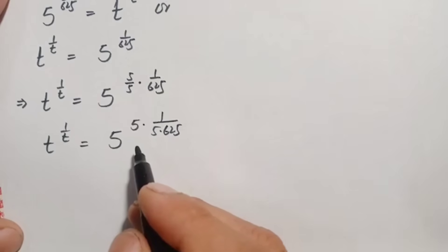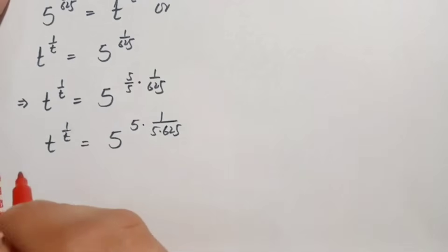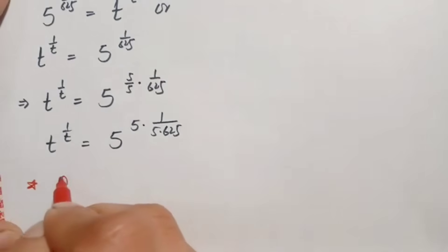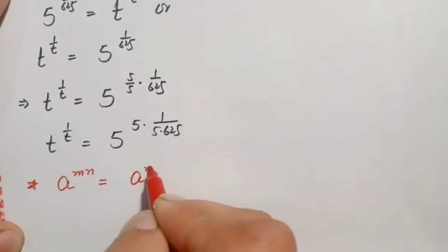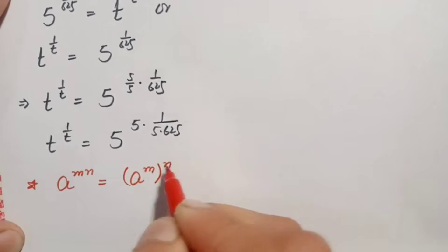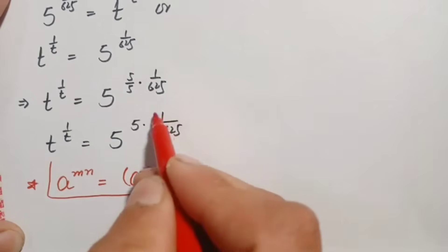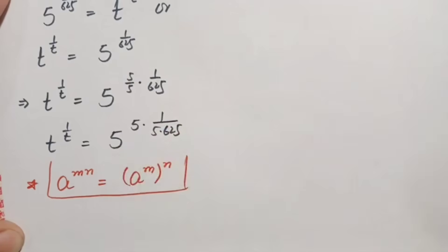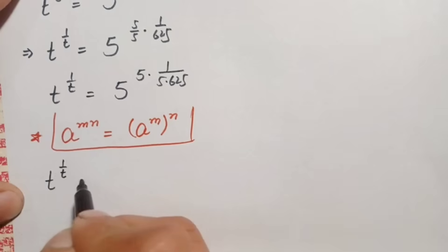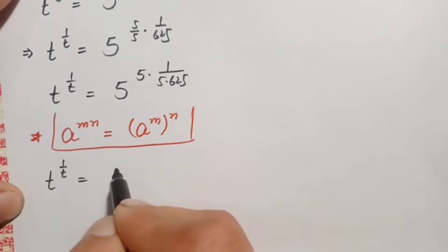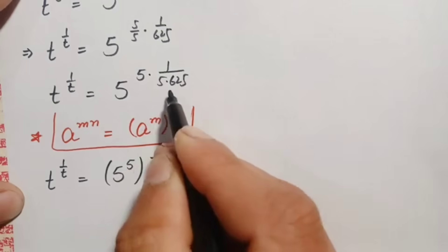Now on the right-hand side we will use the exponential identity: a raised to power m times n equals a raised to power m, all raised to power n. Using this exponential identity, we factor out the power on the right-hand side: this becomes t raised to power 1 by t is equal to 5 raised to power 5, all raised to power 1 by 625.